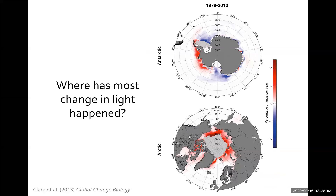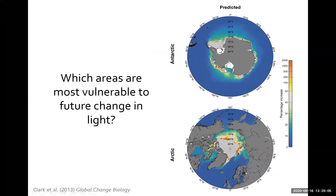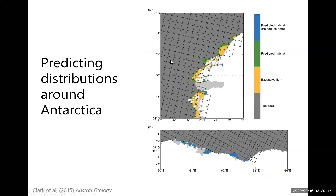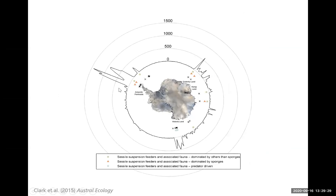We also modeled where most of the change in light has happened around Antarctica. As you'd expect, in the last 30 years or so it's mainly been around the peninsula because that's where most of the ice loss has been, with patchy change elsewhere. Looking towards the future and simulating further change, it looks like most of the change around the peninsula has already happened and it's going to be more of an issue around East Antarctica and other regions. We followed this up with work predicting where these benthic communities would be around Antarctica based on bathymetry and light, creating a map showing how many square kilometers of habitat exist per degree longitude. This might be interesting to follow up if we get to new places during SAFE.